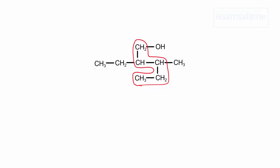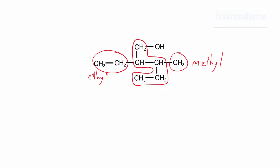After assigning the longest chain, we move to the next step: naming the substituents or branches. Here we have a one-carbon atom group, so it's called methyl, and here we have a two-carbon atom group, so we call it ethyl. After naming the branches, we number the carbon atoms. Since the priority is for the hydroxyl group, we start from the end closer to the hydroxyl group.